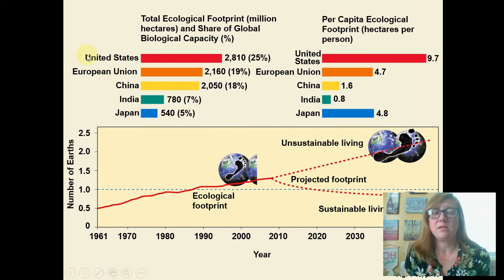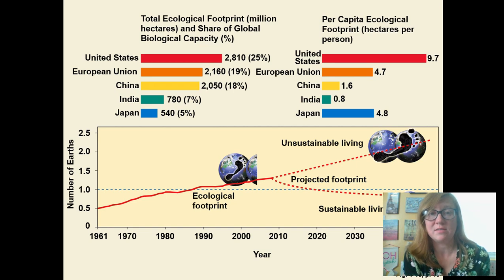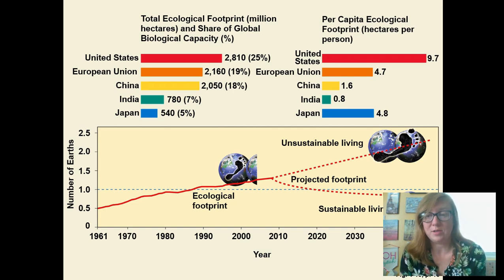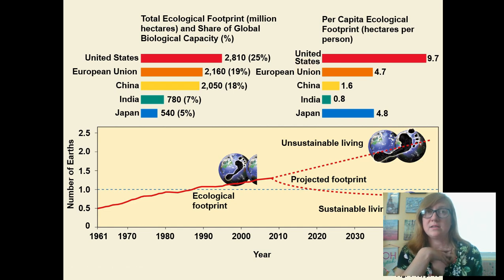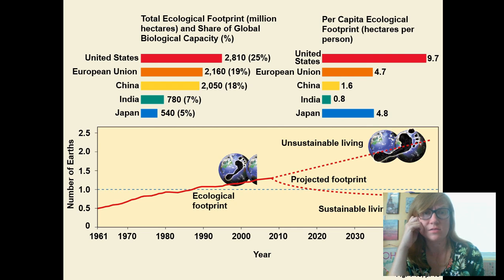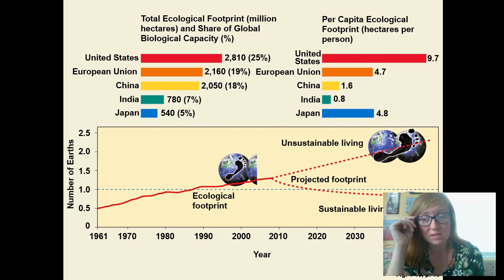People in the United States are using about 25% of resources, but we don't make up 25% of the people on Earth. Look at how much we use per person — we in America consume a great deal, use a lot of plastics and single-use items, make a lot of garbage, and are constantly using electricity.